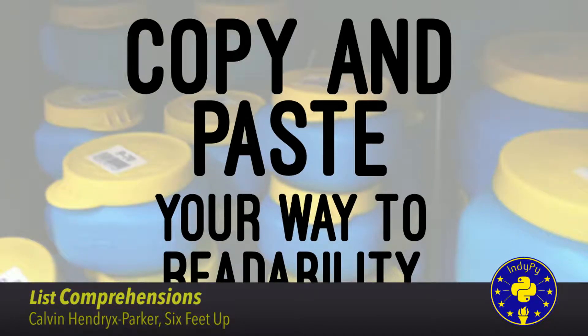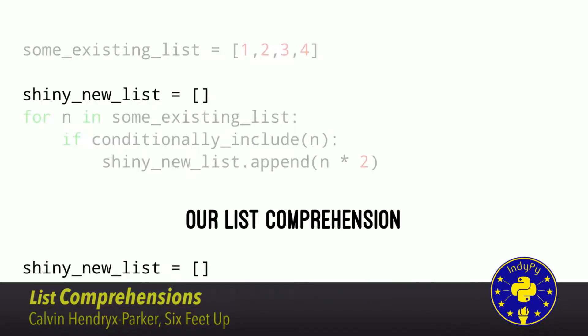So how can we take that existing for loop and copy and paste our way to a list comprehension? We're going to take the for loop we just saw on the previous screens and turn it into a list comprehension — a nice little one-liner, preferably less than 79 characters. I've taken and highlighted the section of code above that you're going to copy and put into our list comprehension below. We take the initial definition of our empty shiny new list and copy it in.